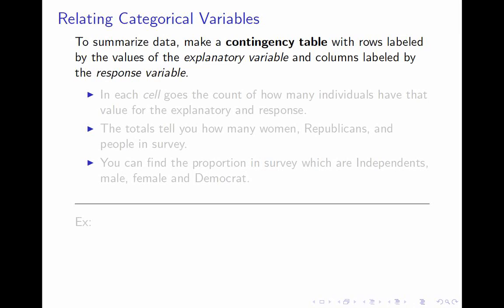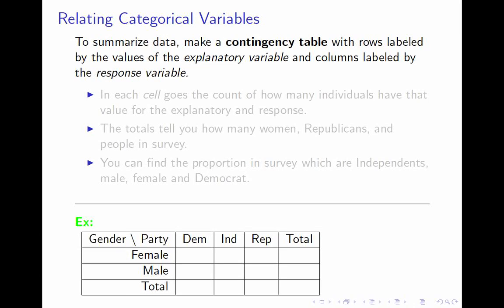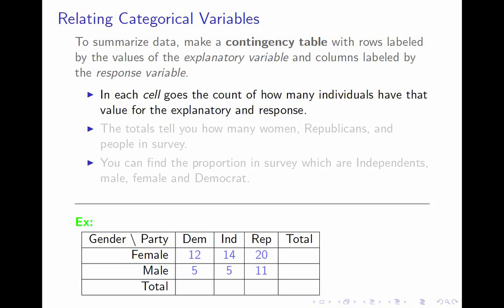We make a table with the rows labeled by the values of the explanatory variable and the columns labeled by the response variable — that's a convention you should follow. In this case, female and male are labeled as rows, and Democrat, Independent, and Republican are the columns. In each cell, we put how many individuals had that combination of values. For example, 12 women said they were Democrats and 5 men said they were Independents.